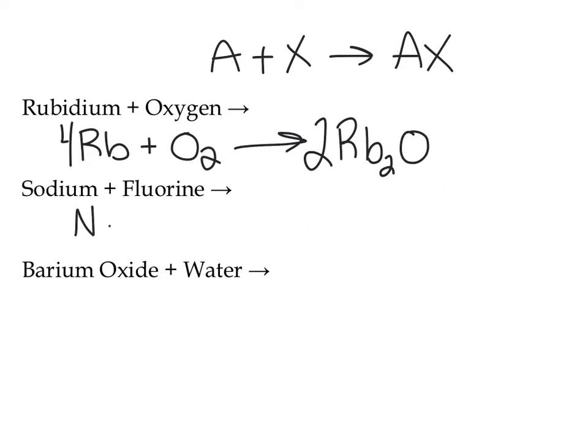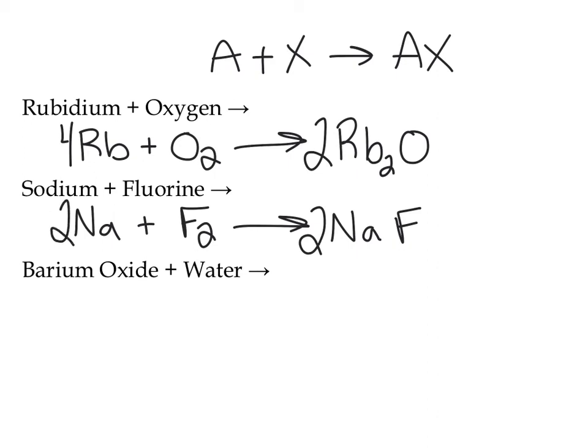For the next example, I have sodium, which is Na, plus fluorine, which is F₂. This is just like number two on my sheet. I want to bring one of each over and cross the charges. Sodium has a one-plus charge, fluorine has a minus one. I cross, and that's the formula. Now I just need to balance, so I need a two there and a two there.